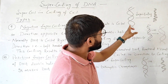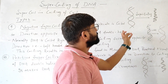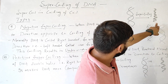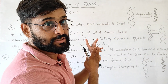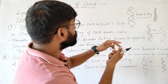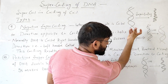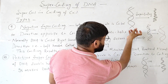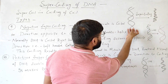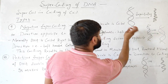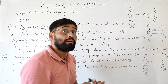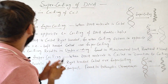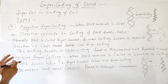This coiling can occur in one direction, which makes it compact, or it may be in reverse. It may coil in one direction and make it compact, or it may coil in the reverse direction, which will make it less compact. So this is called supercoiling.